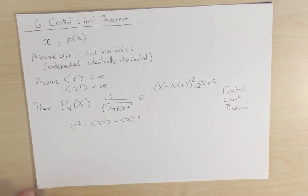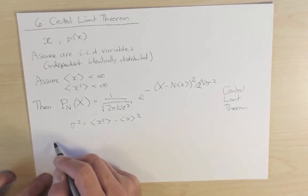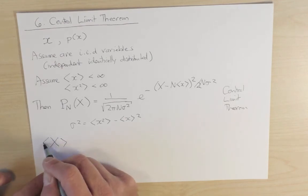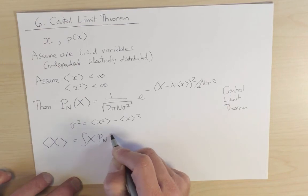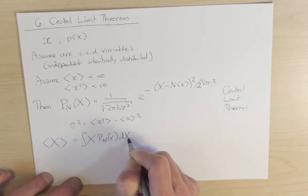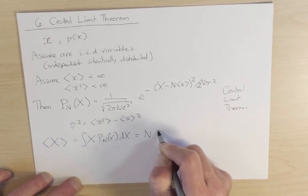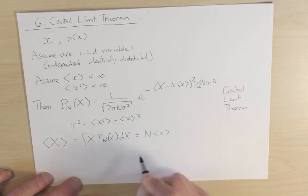So notice also that from this result, we now know that the mean displacement after n steps of a random walk, which is just the integral of x p n of x dx, is equal to n times the displacement after a single step.